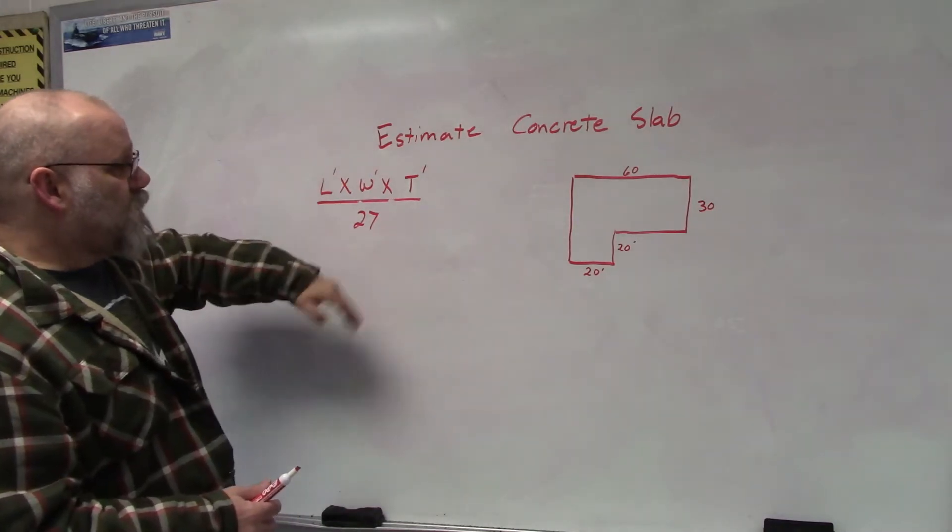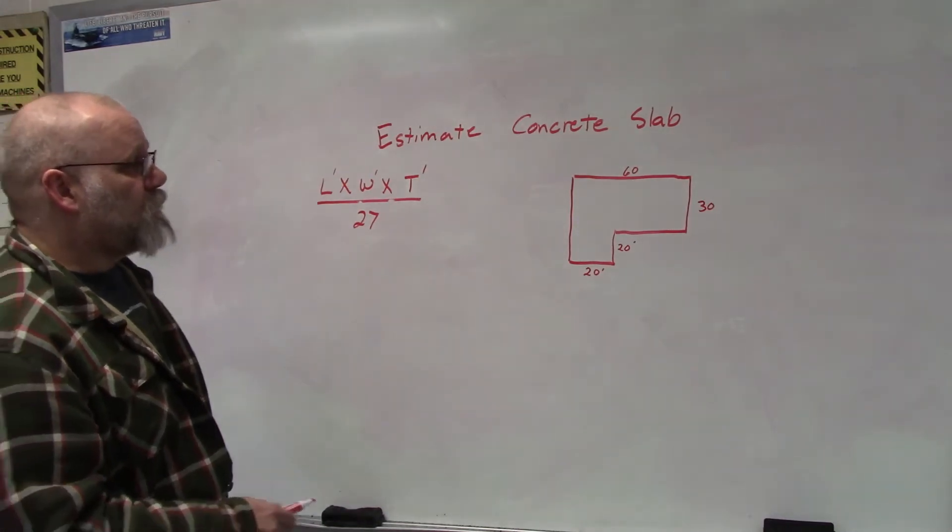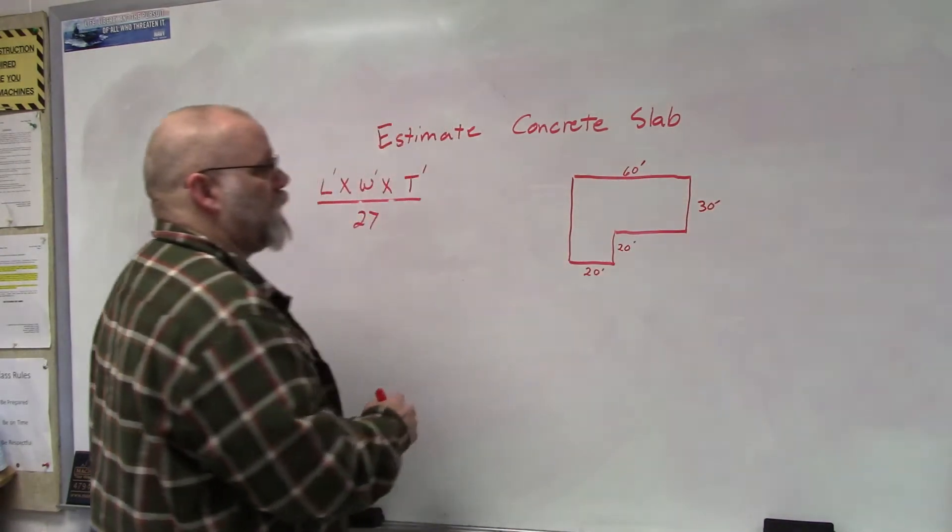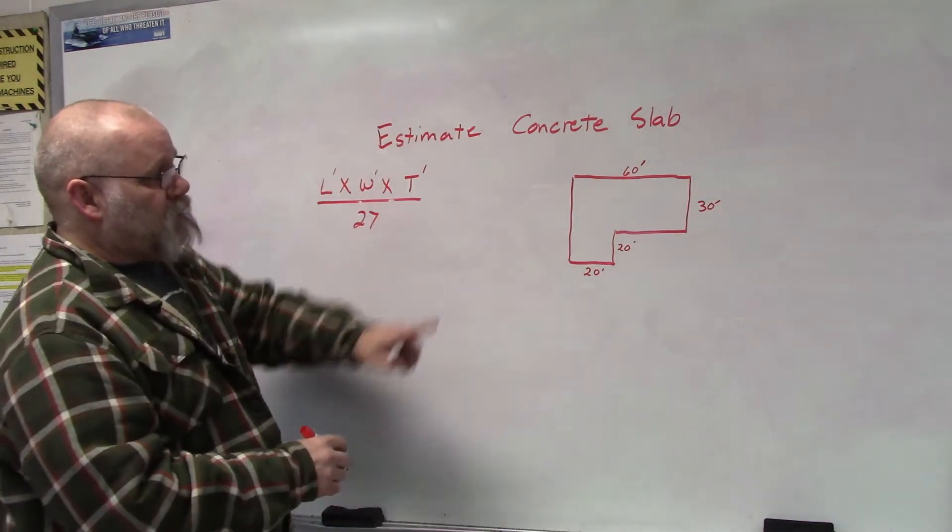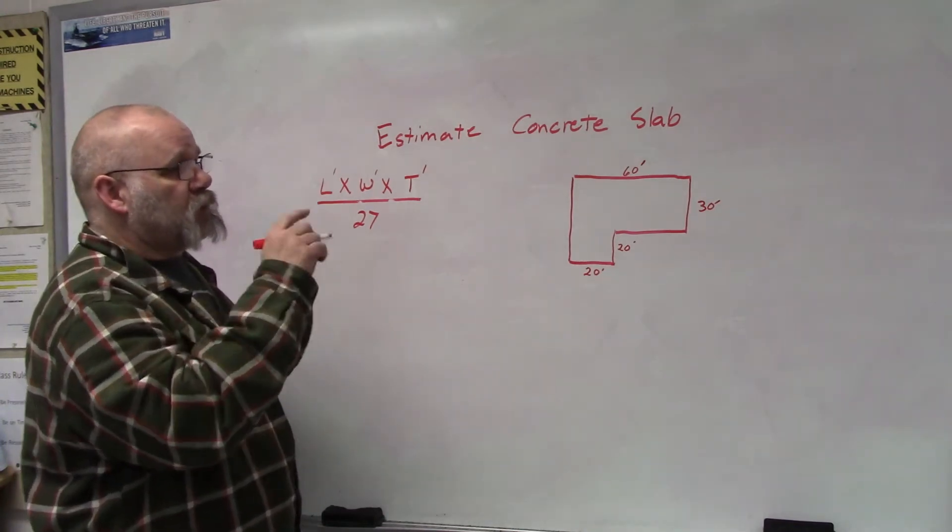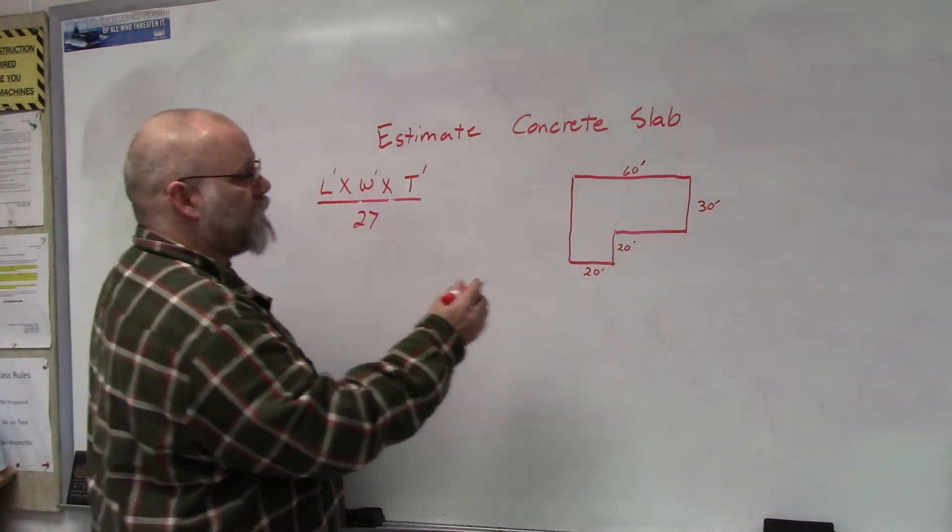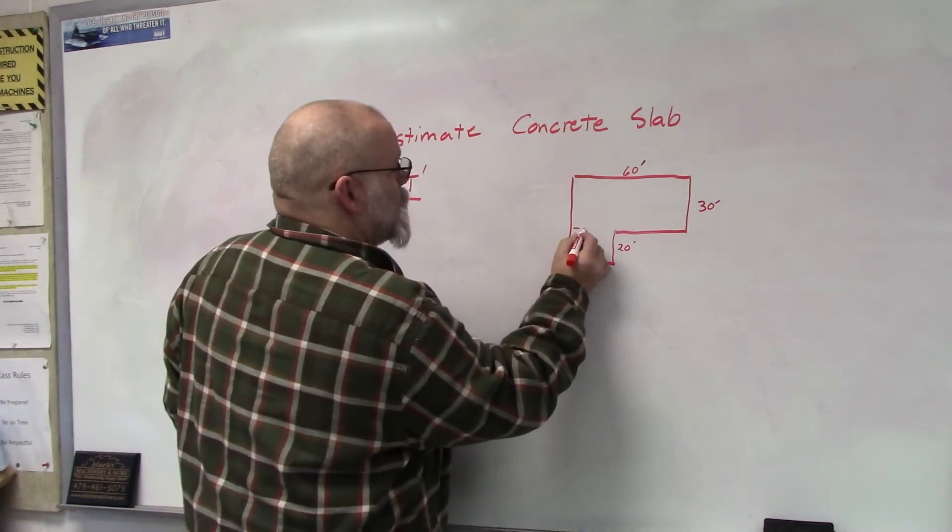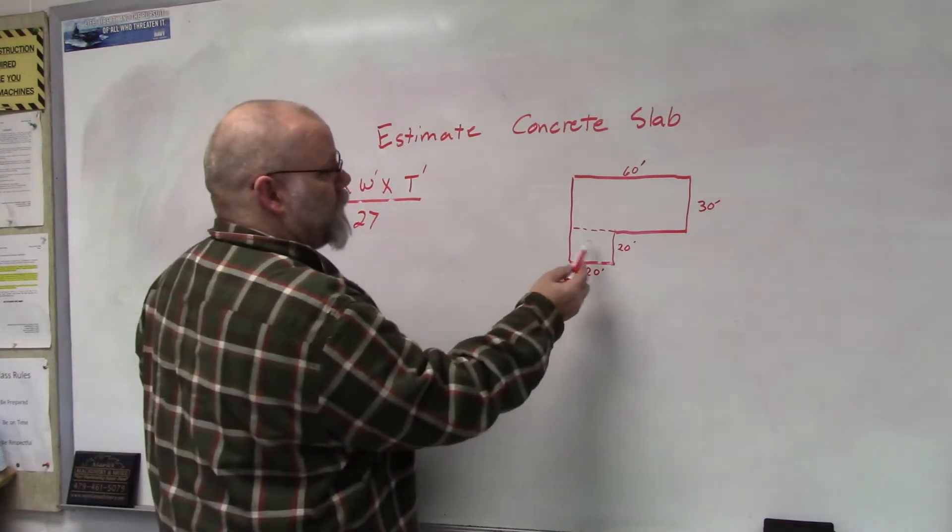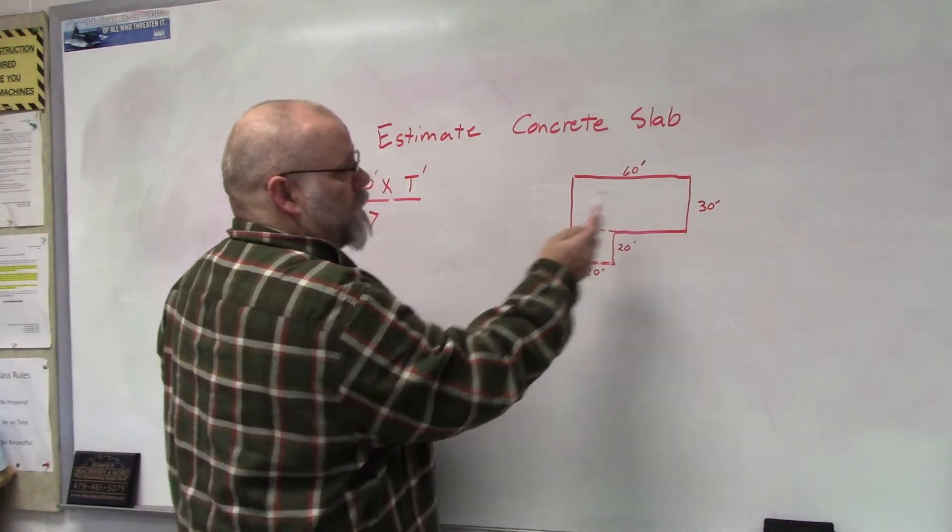My numbers over here are in feet. Now if I have a shape like this, I have to do more than one calculation because I have to divide it into shapes that I have formulas for. So I'm going to divide it into this square and then I'm going to divide the rest of it into that rectangle.